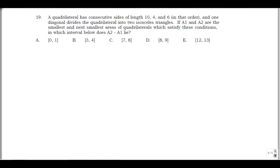We have a quadrilateral with consecutive sides of length 10, 4, and 6. I'm going to draw three sides and then we have this unknown fourth side — 10, 4, 6 — and what we know is that one diagonal divides the quadrilateral into two isosceles triangles.